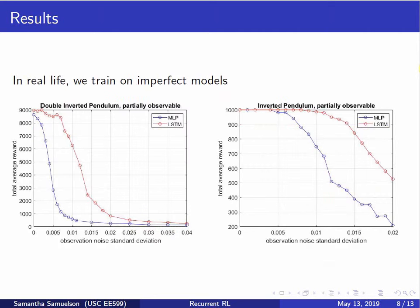However, now we look at what happens when we don't train on perfect models — since this whole approach is motivated by the fact that we rarely have that kind of training information available on physical systems. Here we look at partially observable systems, training only on position information: linear position and angular position of the single and double inverted pendulums. When we train on imperfect data, adding memory to the neural net actually gives us much better performance, and this is more robust as we add more noise to the measurements. This suggests the recurrent neural network is doing a better job of learning to compensate for missing velocity information.